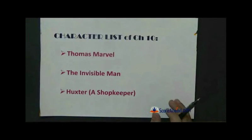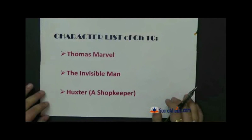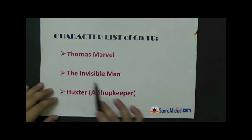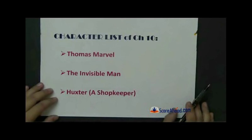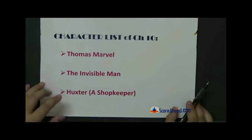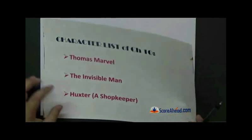And why did he convince him? It was because he himself could not go there. And the character list of chapter number 10: Thomas Marvel, The Invisible Man, and Huxster who is a shopkeeper. So this is a new character who is introduced, a minor character, Huxster the shopkeeper.